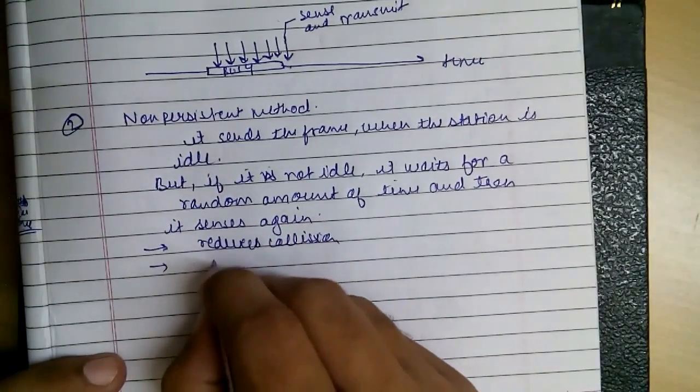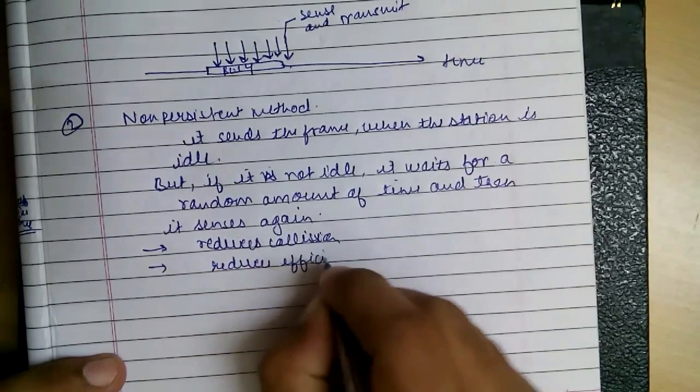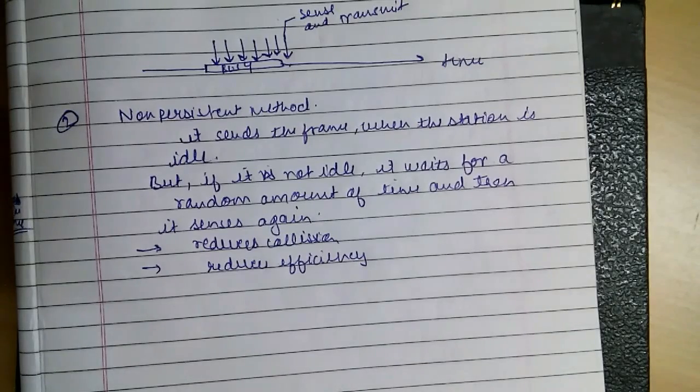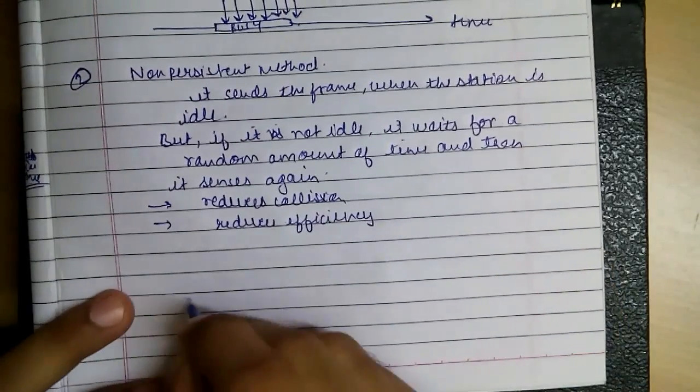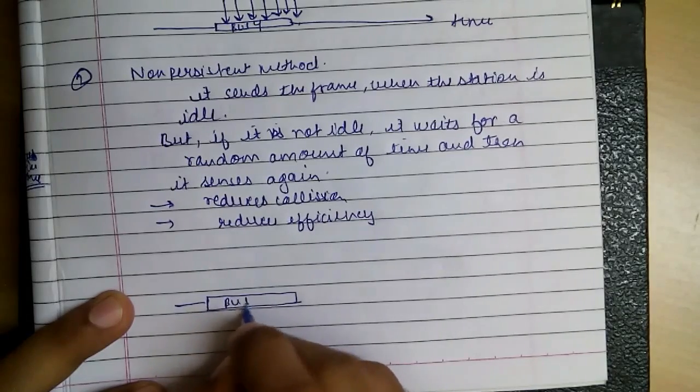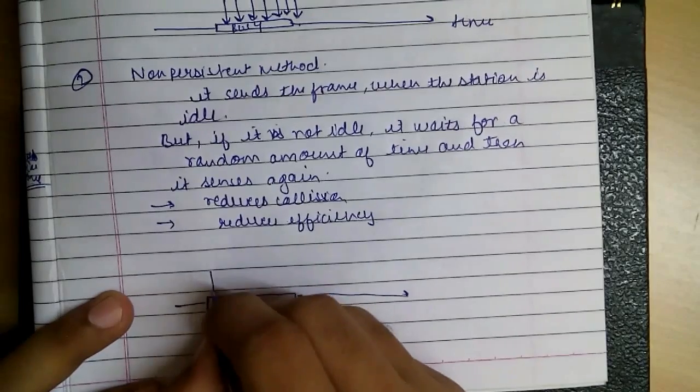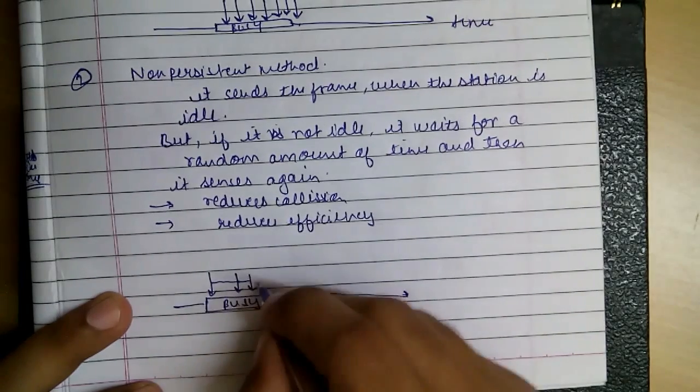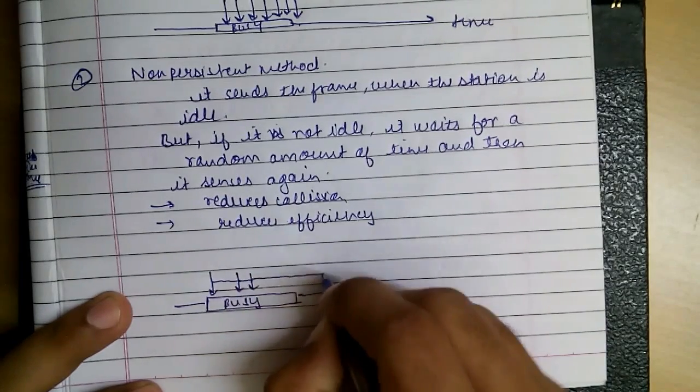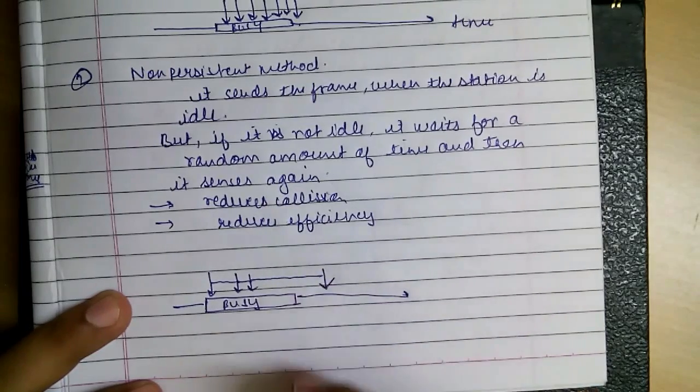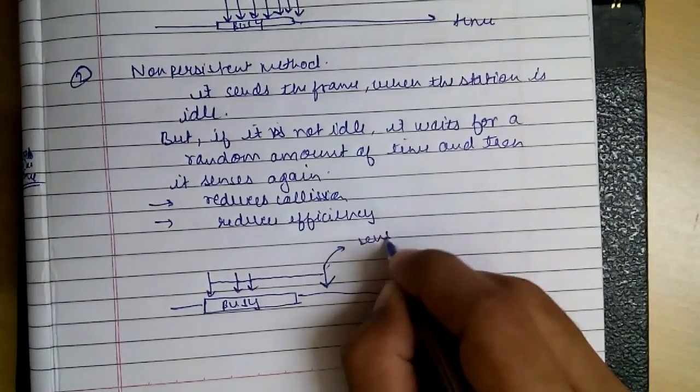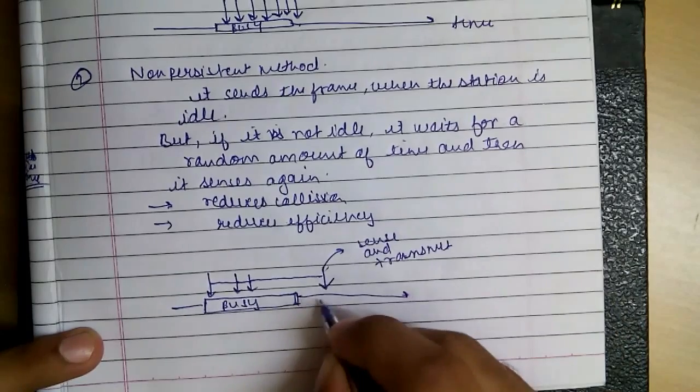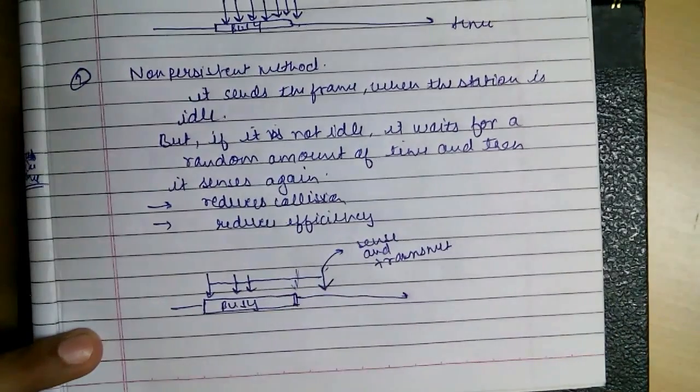And efficiency is also reduced. Why? Because the medium may be idle but because of the random time it is waiting, so it could have sent before, so the efficiency is reduced. Like say, it senses here then it waits for some time, it senses here then waits for some time, it senses here waits for another random amount of time, then senses here. So at this point it will sense and transmit.